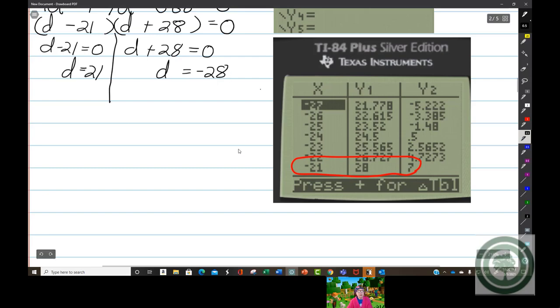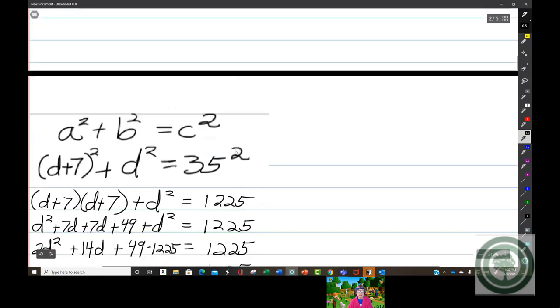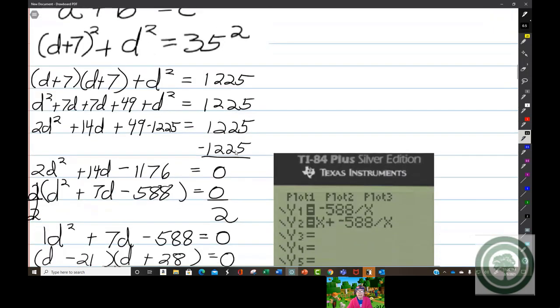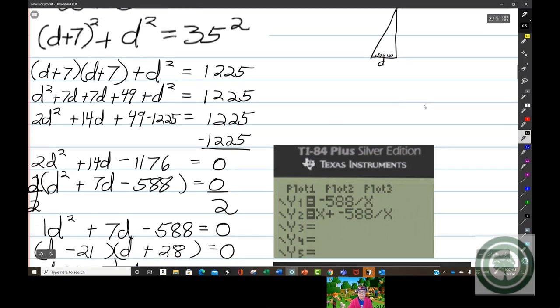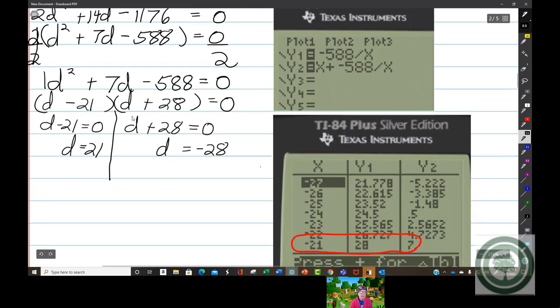Wait a minute. That's the distance from the end of the wire to the tower. There's grass growing and stuff. So that doesn't make any sense to make it negative 28.